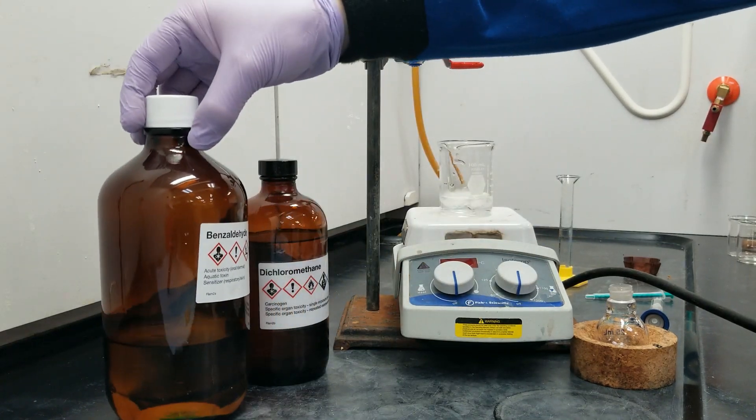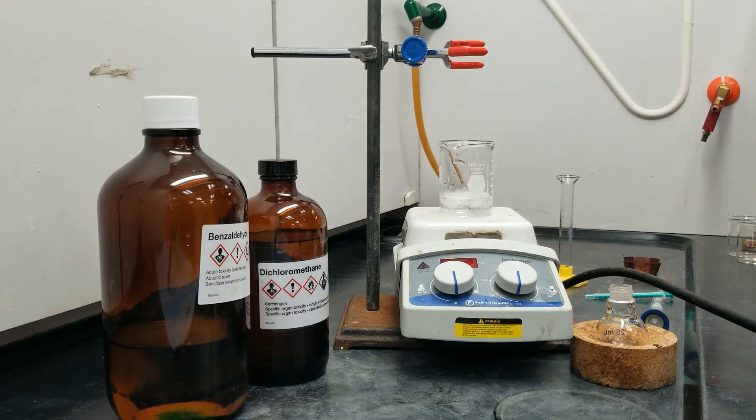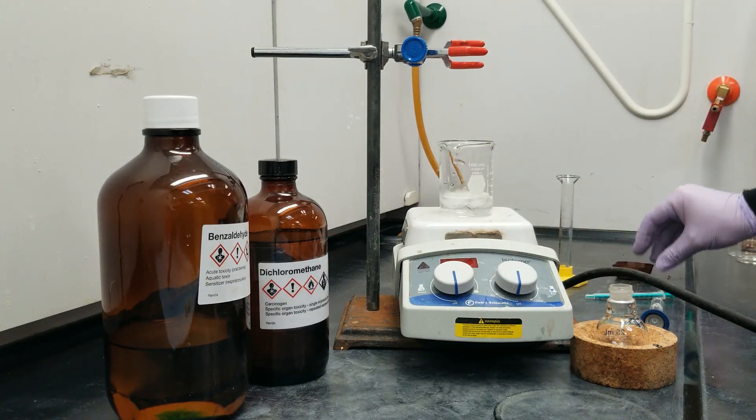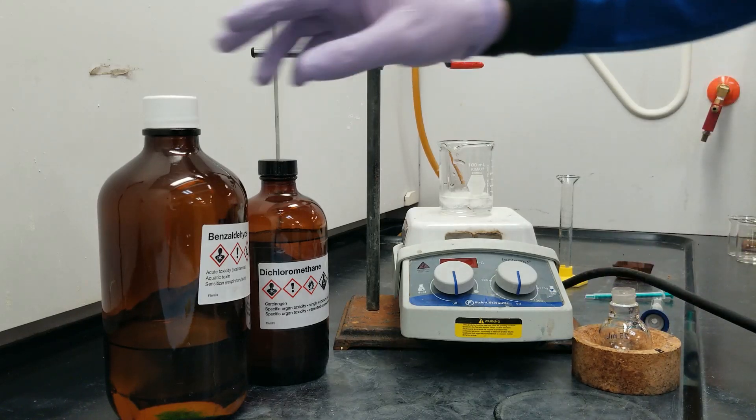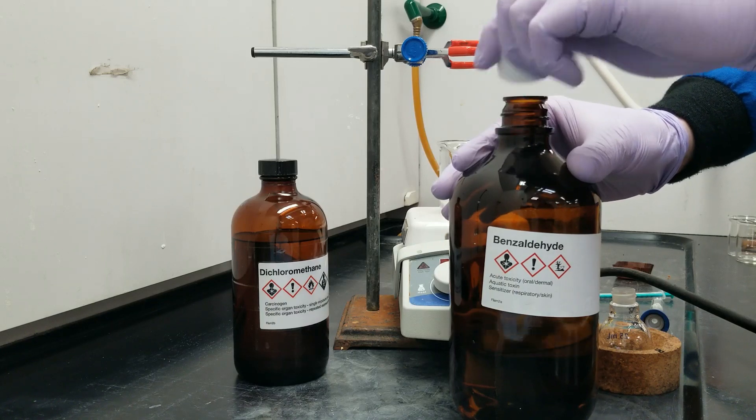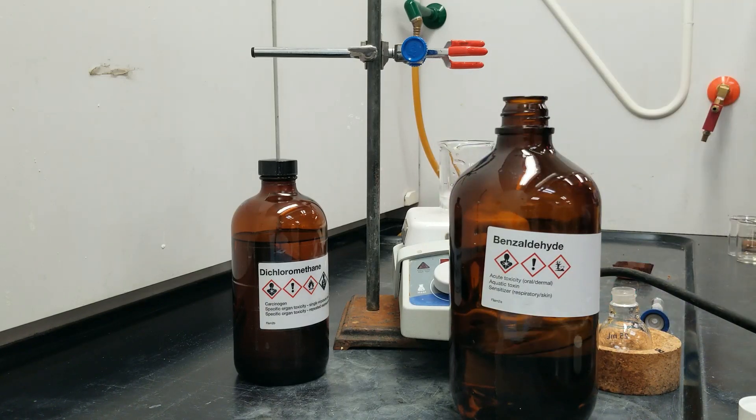This is a rather simple aldehyde, and it's going to be reacting with my Wittig reagent. So let's go ahead and start by adding 0.12 milliliters of benzaldehyde.